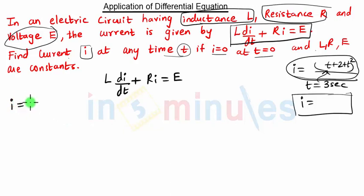If we take L to the denominator, we get di/dt + (R/L)i = E/L. If you observe this equation, it is similar to dy/dx + Py = Q.